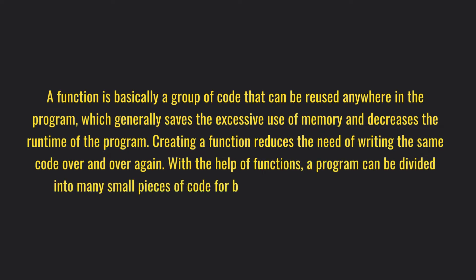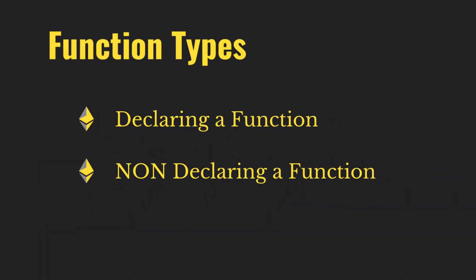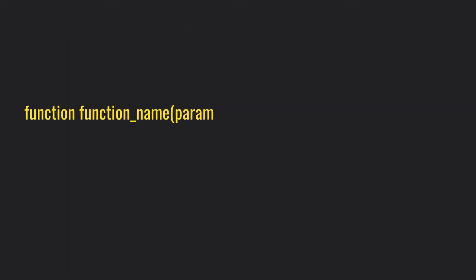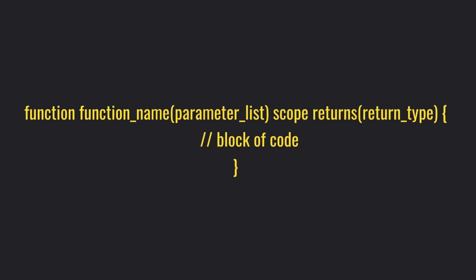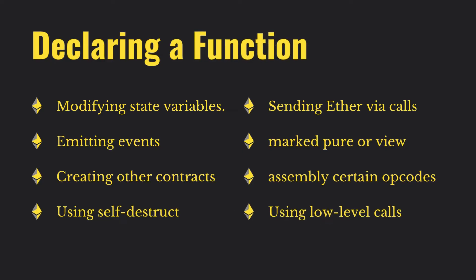Your interviewer might ask what kinds of functions exist in Solidity smart contracts. There are declarative functions and non-declarative functions. The code snippet for a function has the function keyword, the function name, and optional parameters. You then define the scope — public, external, or internal — and optionally a return keyword. Other function types in Solidity include modifying state variables, events, creating other contracts, using self-destruct, sending ether via calls, and calling functions marked pure or view.